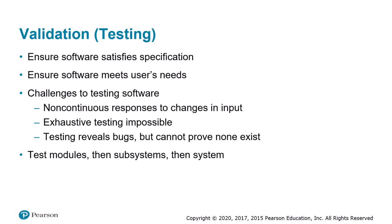Phase three is validation. The purpose of validation — also called testing — is to ensure the software satisfies the specification and meets the needs of the user. In some companies, testing is an assignment given to newly hired software engineers who soon move on to design work. However, good testing requires a great deal of technical skill, and some organizations promote testing as a career path.